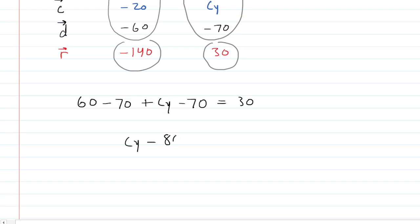And then we add 80 to both sides of this equation. We can see that c sub y is equal to 110 meters. This would be the correct answer to part b of the question.